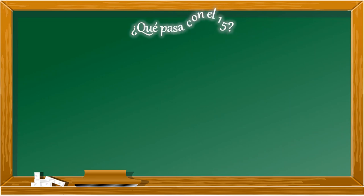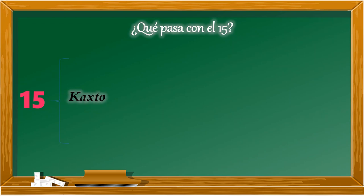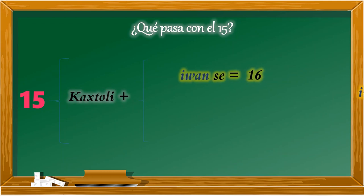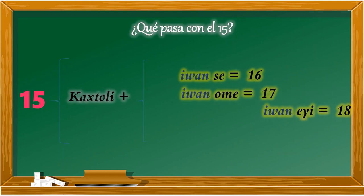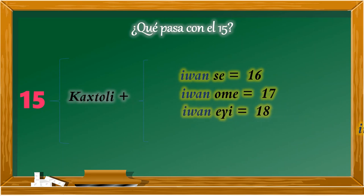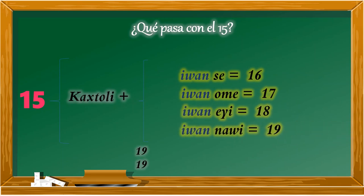¿Qué pasa con el 15? El 15 tiene su propio nombre, y a partir de ese se siguen conformando otras cantidades. Por ejemplo, para conformar el 16 se suma el 15 más el 1, que sería castoliguance. Para el 17 castoliguanome, para el 18 castoliguaneyi, y para el 19 castoliguanaui.